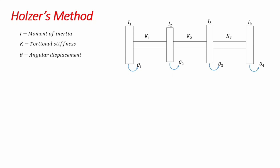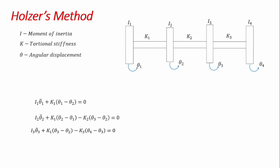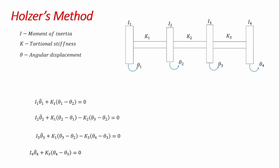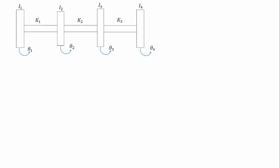The first thing we want to do is to get the equations of motion for the system. Because it's a four degree of freedom system, there are going to be four equations of motion. These equations of motion, derived using any known techniques, represent the first step to begin deriving our formulations as applied in Holzer's method.